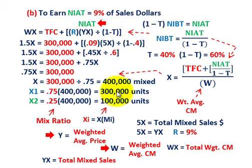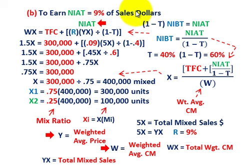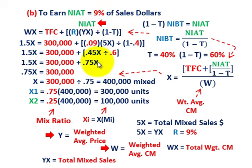Coincidentally these are the same units as for net income before taxes. The only difference is that net income after taxes used 9% of sales dollars versus net income before taxes which used 15% of sales dollars. This was done just to show how the process works.